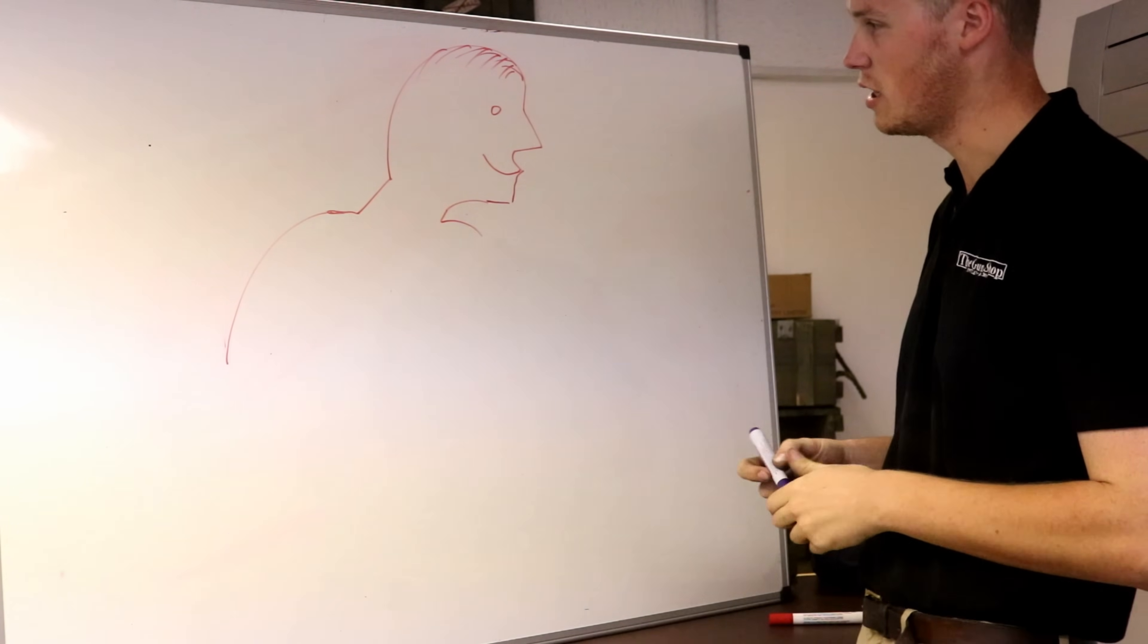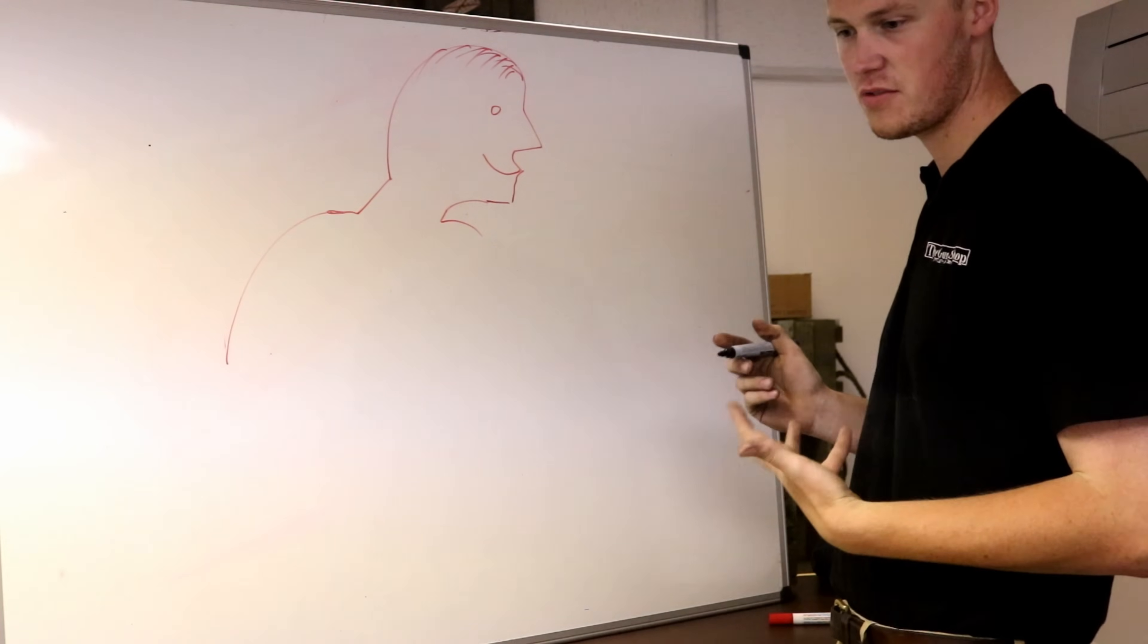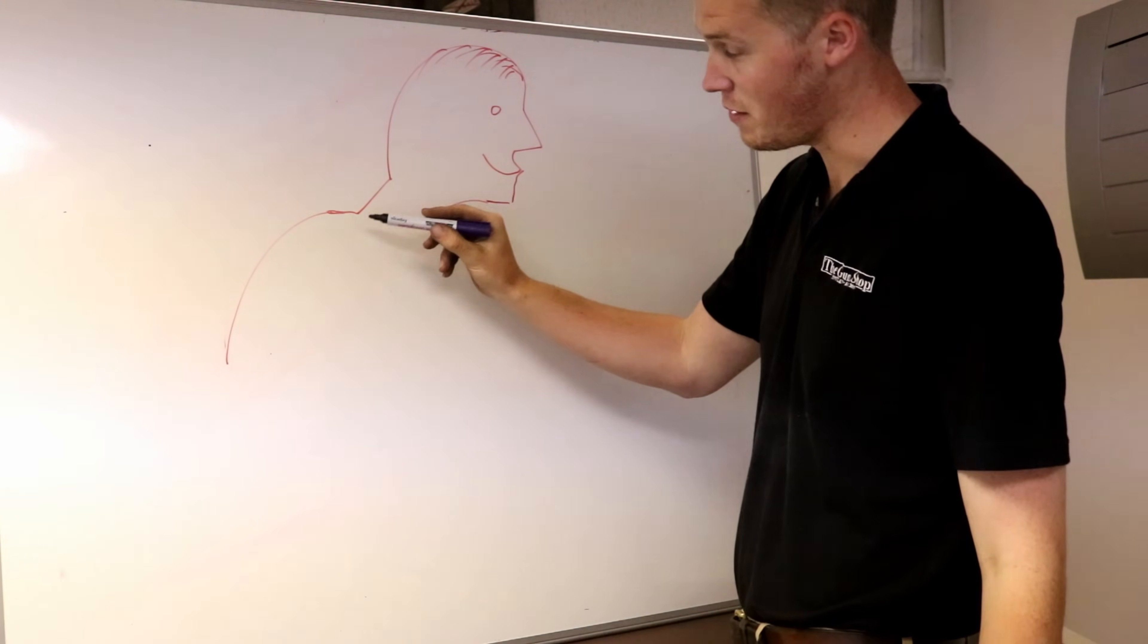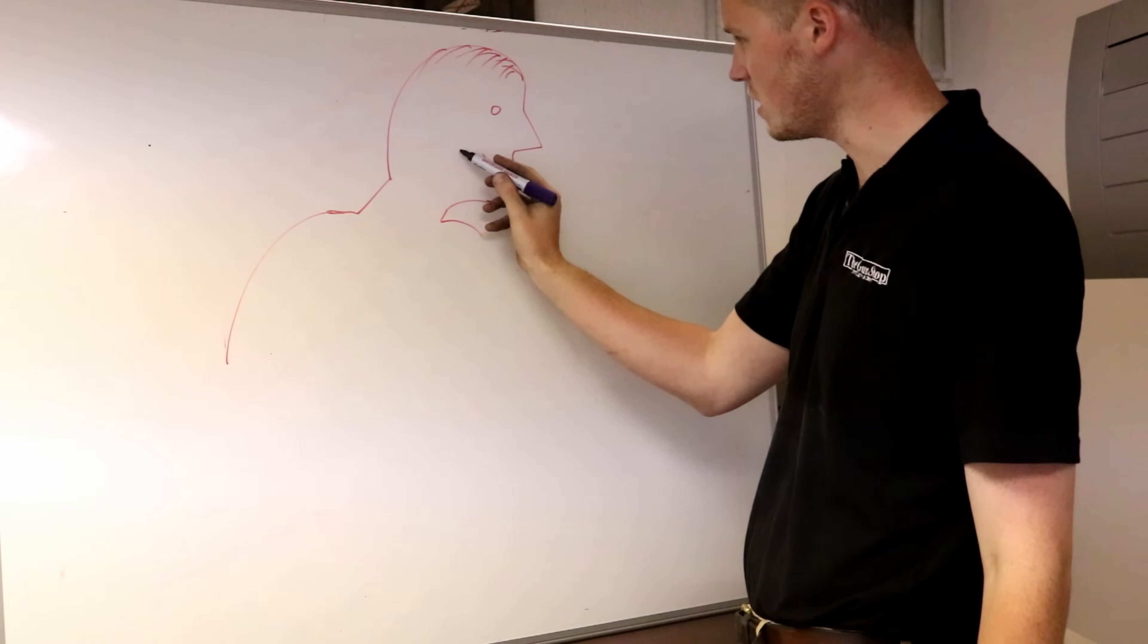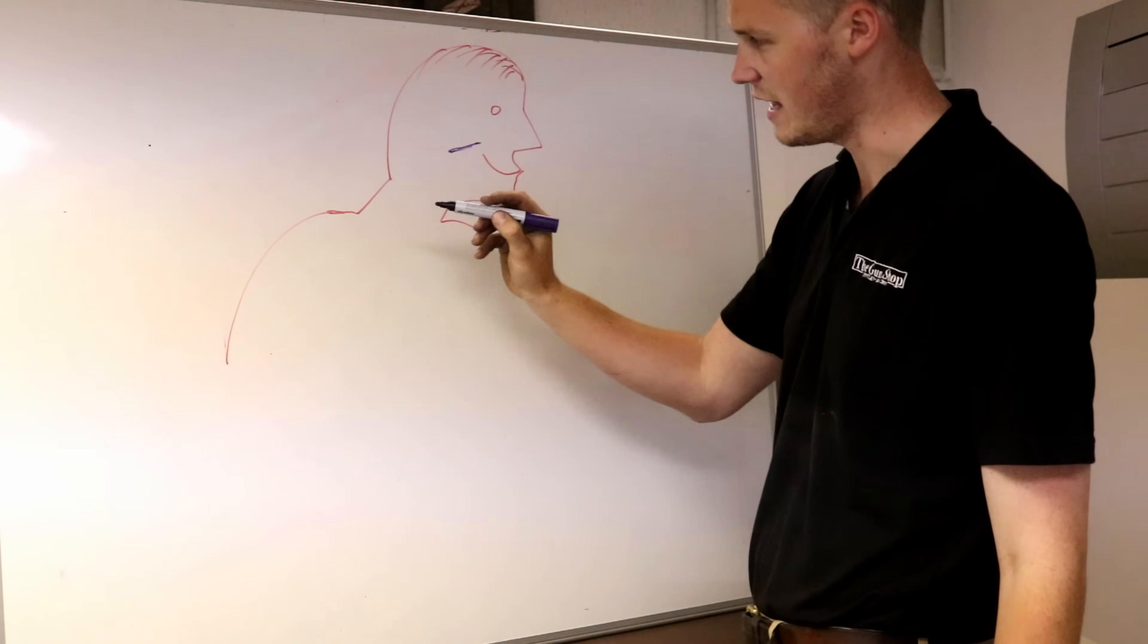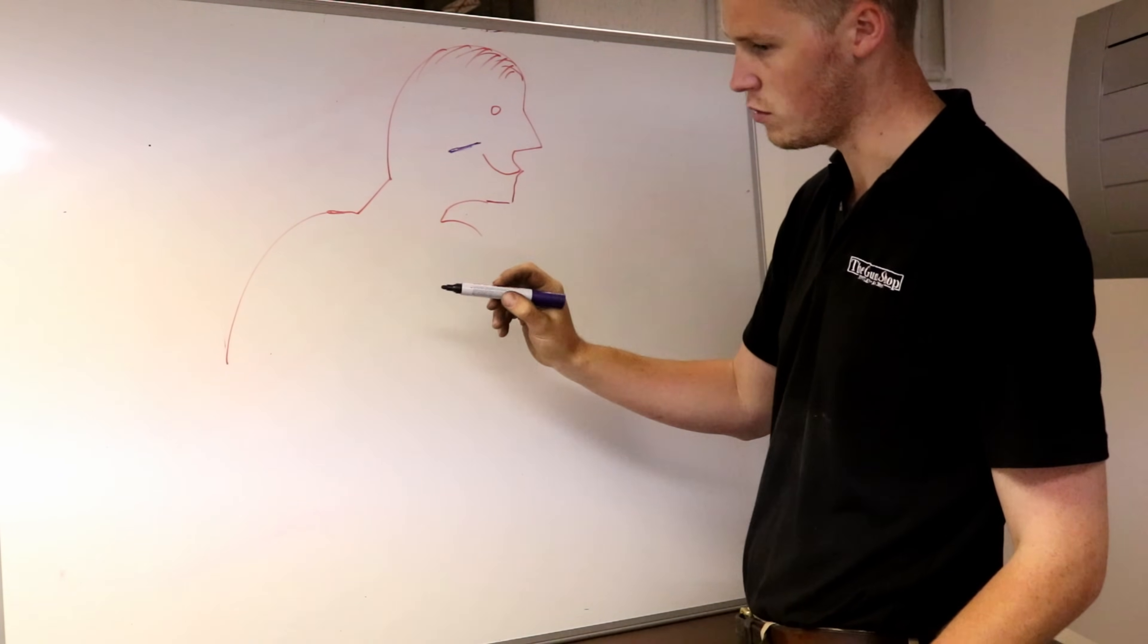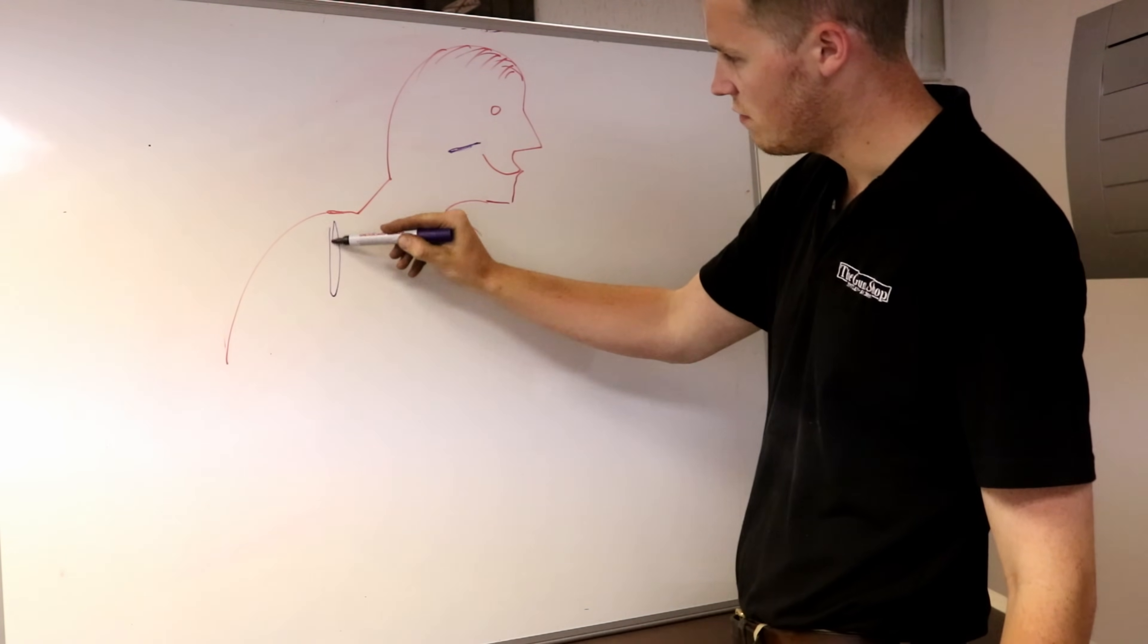Alright, so this is our shooter. First we have to establish the principles of gun fit. The principles of gun fit, and probably the most important ones: A, is that your line of sight looks down the rib. B, that it fits nicely into your cheek bone so you have a nice cheek weld every time. And C, these are not in order of importance because they're all damn important, that you have a good fit in your shoulder.